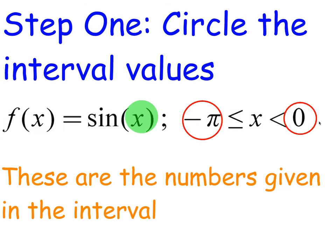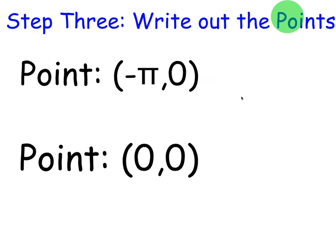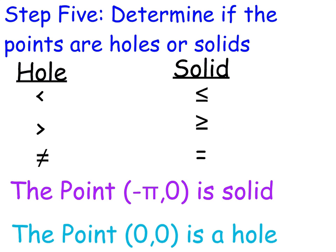For step 3, write out the points. My second point, I'm plugging in 0. Sine of 0 is also 0, so my second point is 0, 0. For step 4, circle the relations in the interval. I have two relations here, a less than or equal to and a less than. That tells me that at negative pi, I'm going to have a solid point because of this bar below the inequality. But at 0, because there is no bar, I'm going to have a hole. That's step 5, which is to determine if the points are holes or solids.